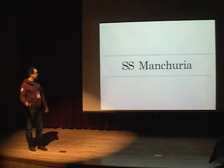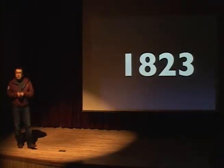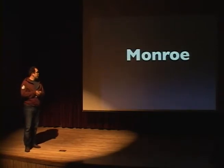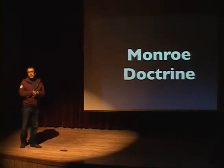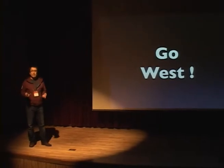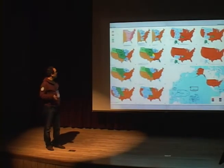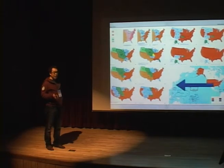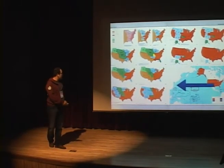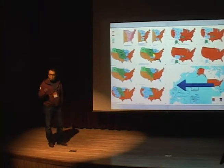So the SS Manchuria. In 1823, James Monroe created the Monroe Doctrine. What this is, basically, is 'go west.' With this doctrine, the United States went west from the 13 original colonies all the way to the Philippines. This is the Monroe Doctrine. During this process, anyone who was not Caucasian was thought to be an animal.